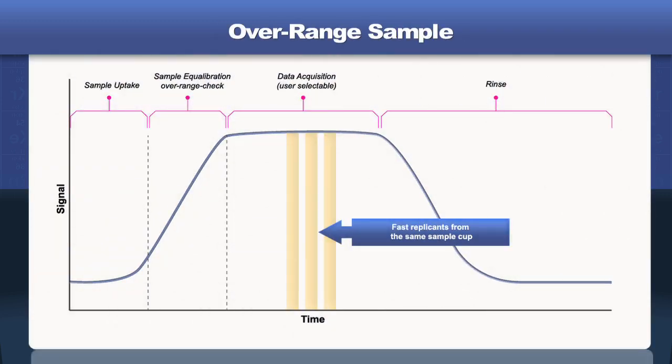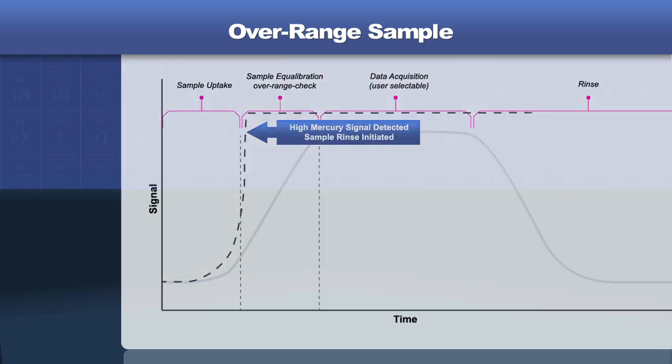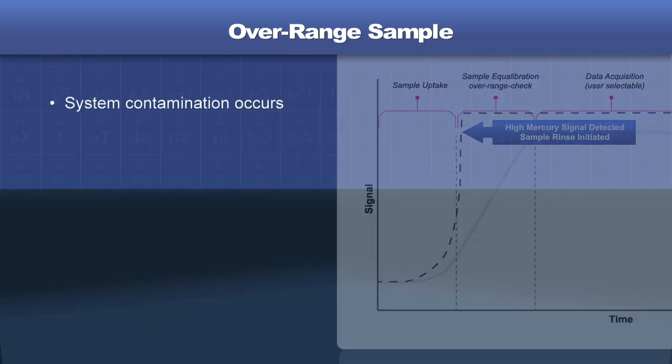On occasion, a sample with unexpectedly high amounts of mercury may be encountered. This can completely contaminate the system, forcing the operator to stop the sequence and clean or repair the system.